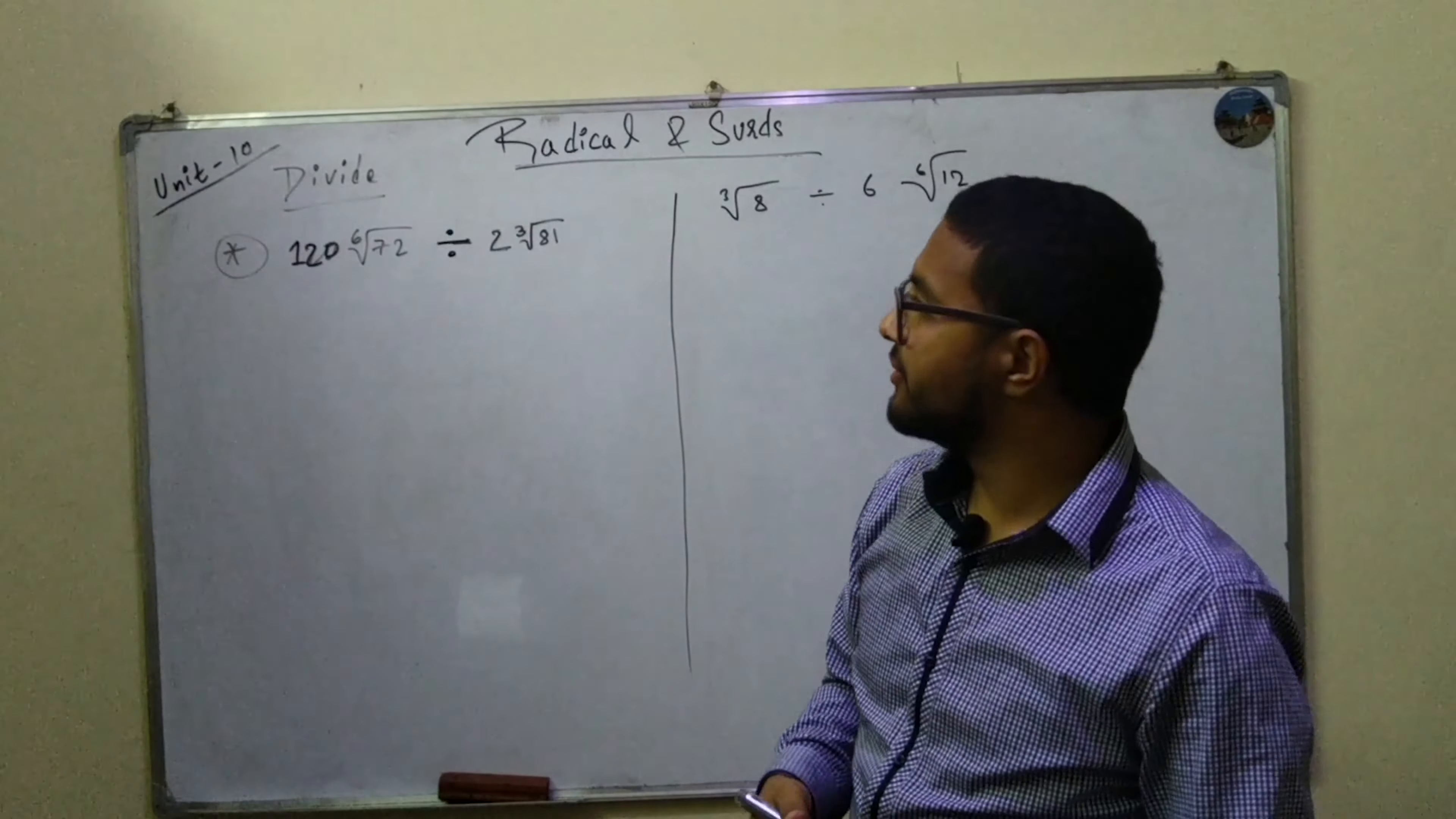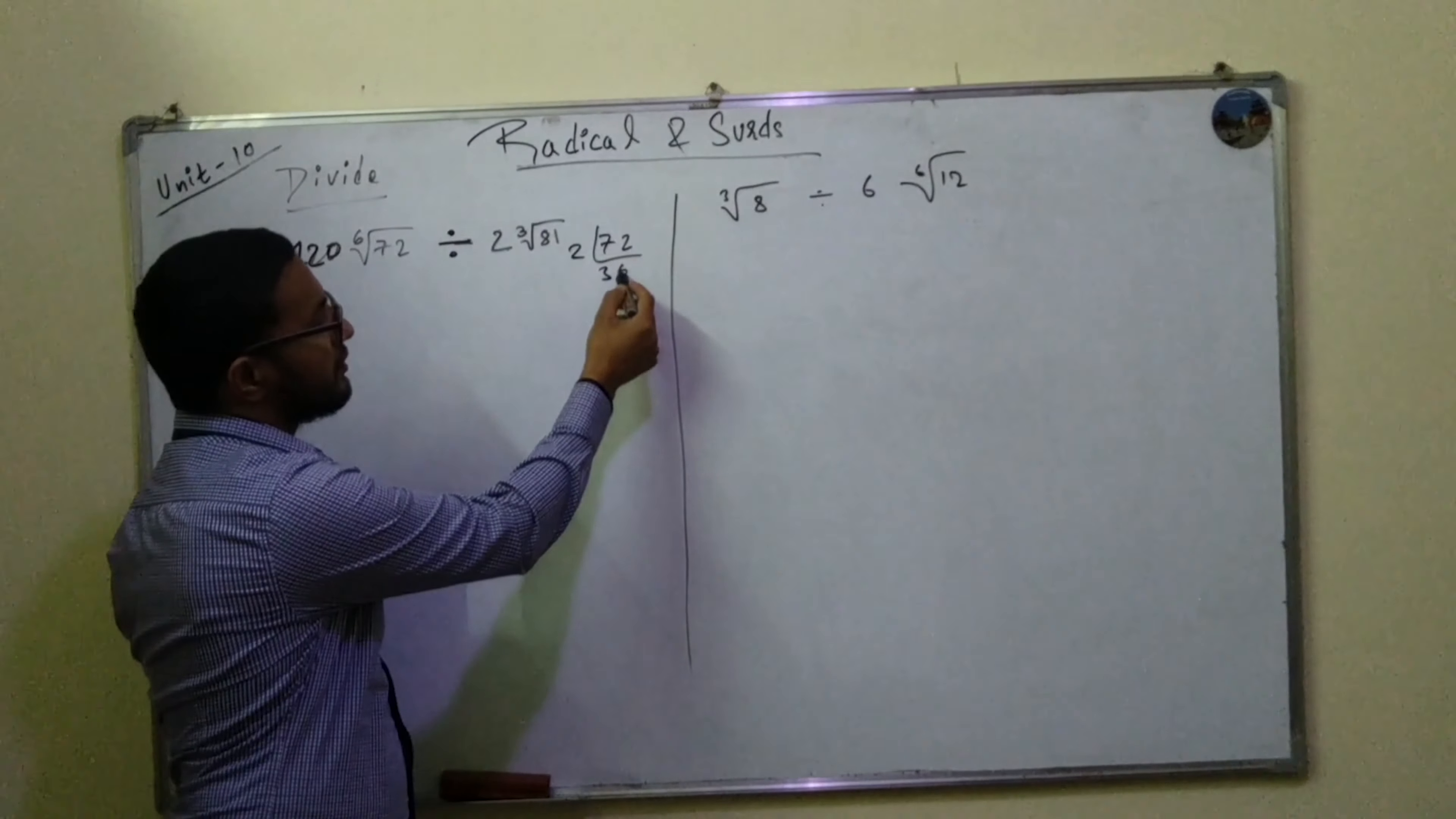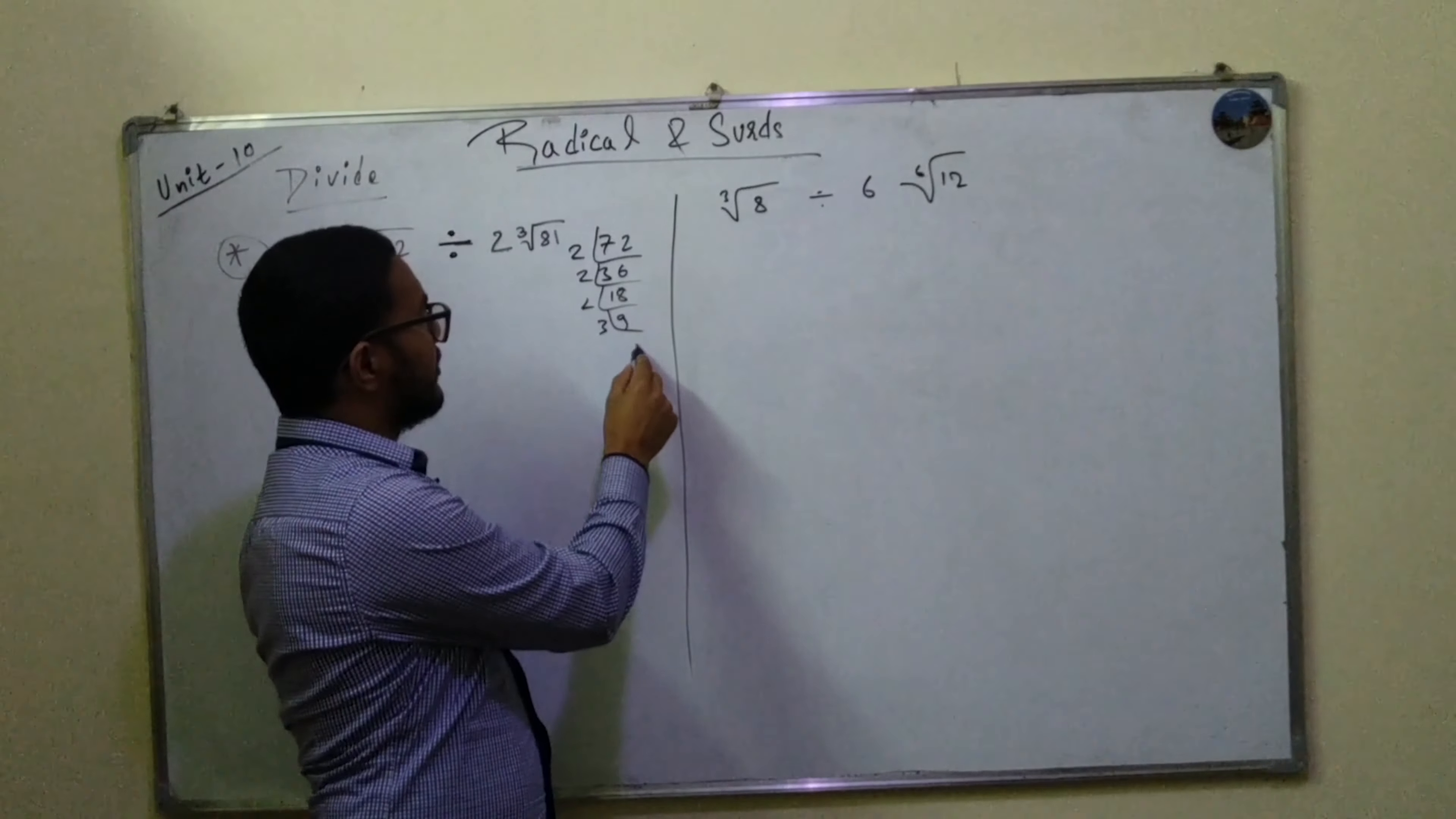What we've been given on this particular question is, let's take an example of it. 120 square root of 72, right? So, 2, 3, 2, 6, 8, 2, 80, and then 2, 9, right.